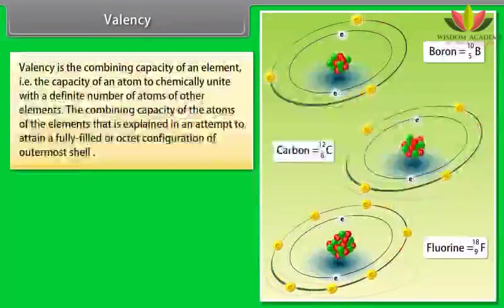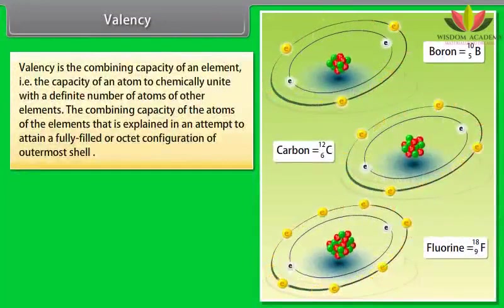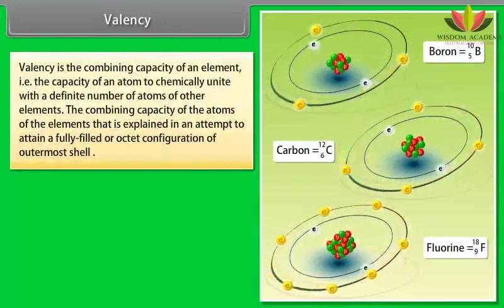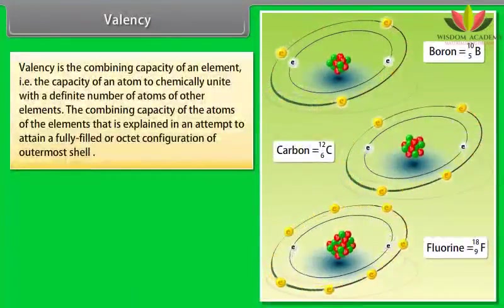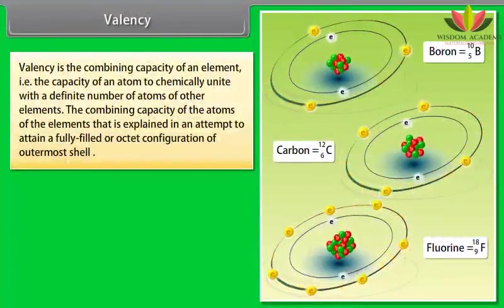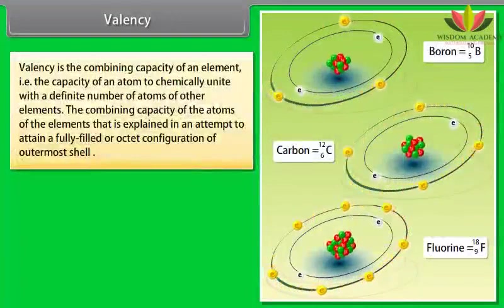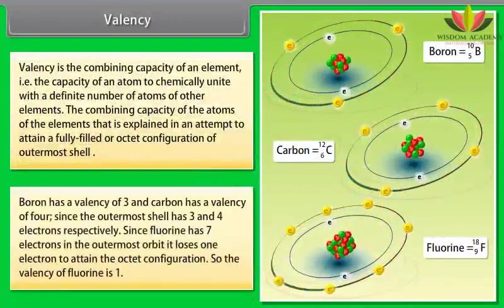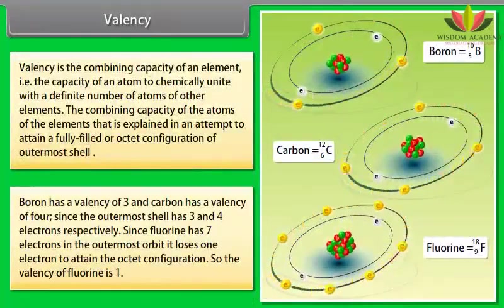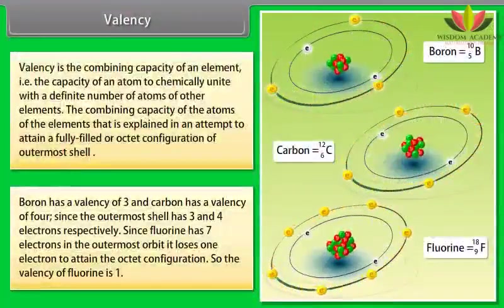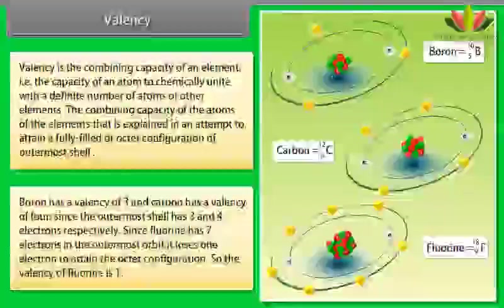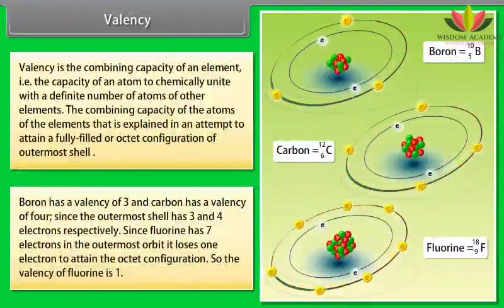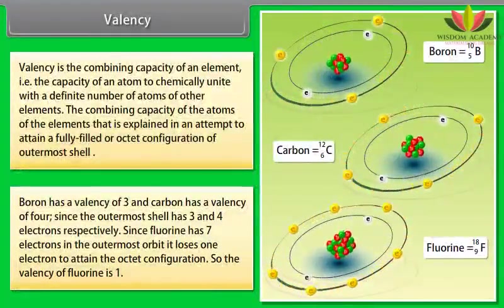Valency. Valency is the combining capacity of an element, that is, the capacity of an atom to chemically unite with the definite number of atoms of other elements. The combining capacity of the atoms of the elements is explained in an attempt to attain a fully filled or octet configuration of outermost shell. Boron has a valency of 3, and carbon has a valency of 4, since the outermost shell has 3 and 4 electrons respectively. Since fluorine has 7 electrons in the outermost orbit, it loses 1 electron to attain the octet configuration. So, the valency of fluorine is 1.